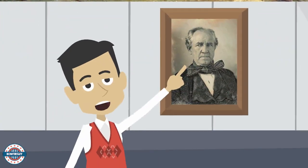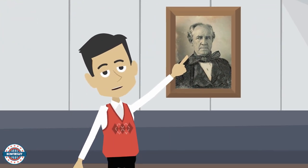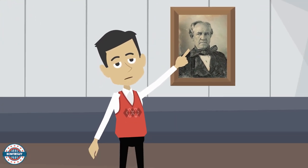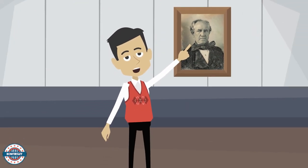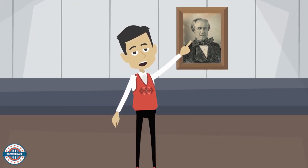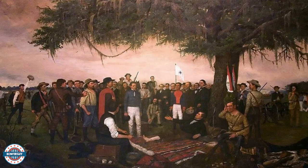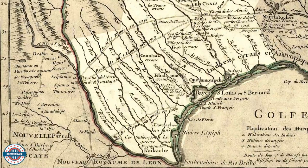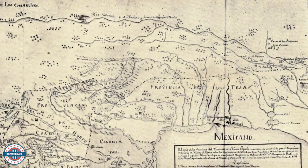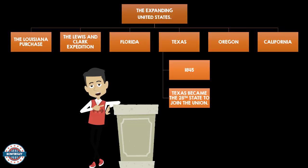In April of 1836, United States General Sam Houston led the Texas Army to victory at the Battle of San Jacinto. Texas finally won its independence from Mexico. In 1845, Texas became the 28th state to join the Union.